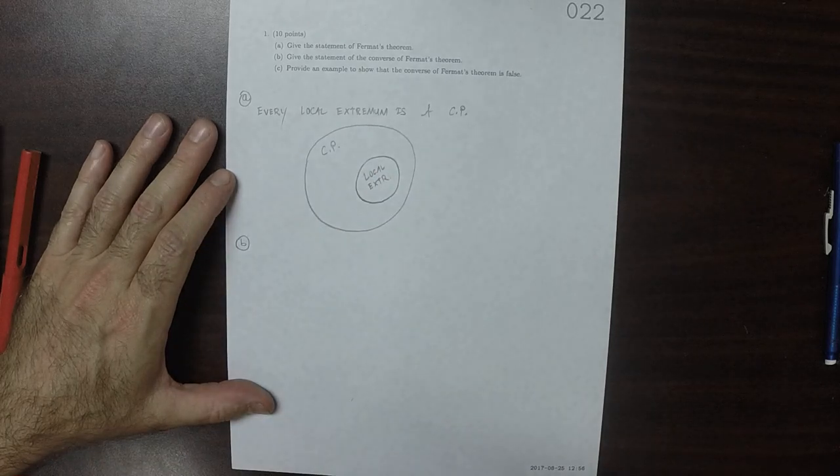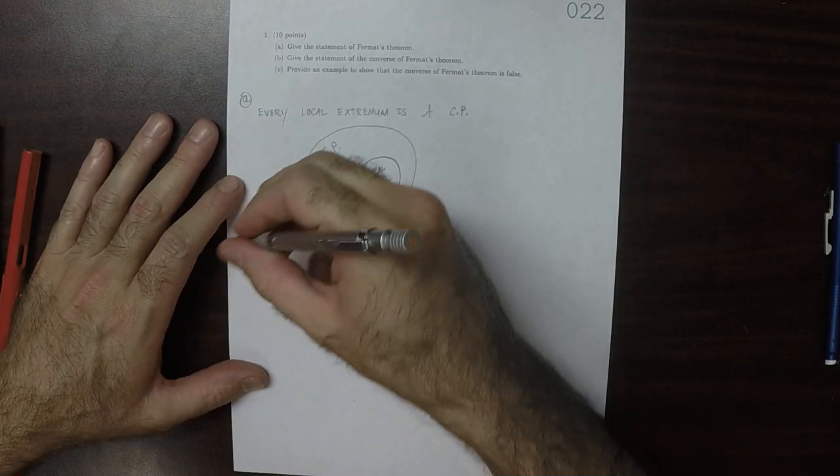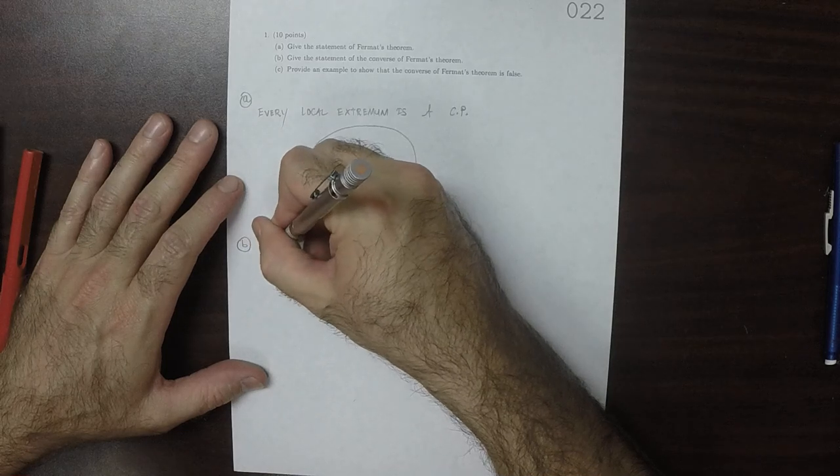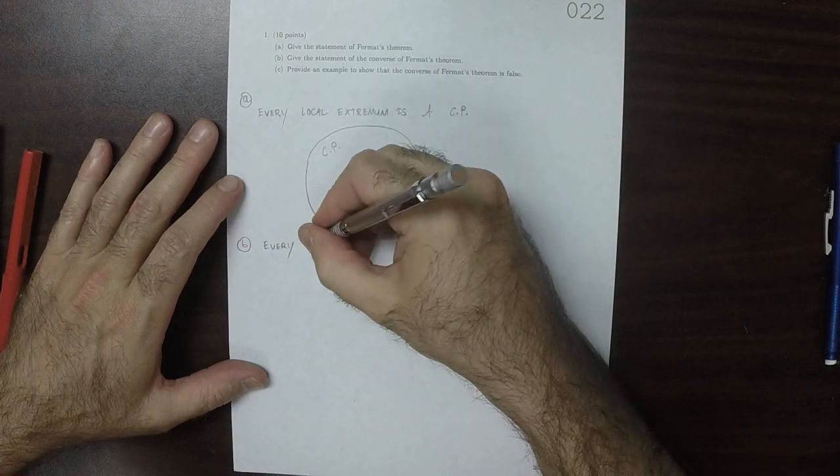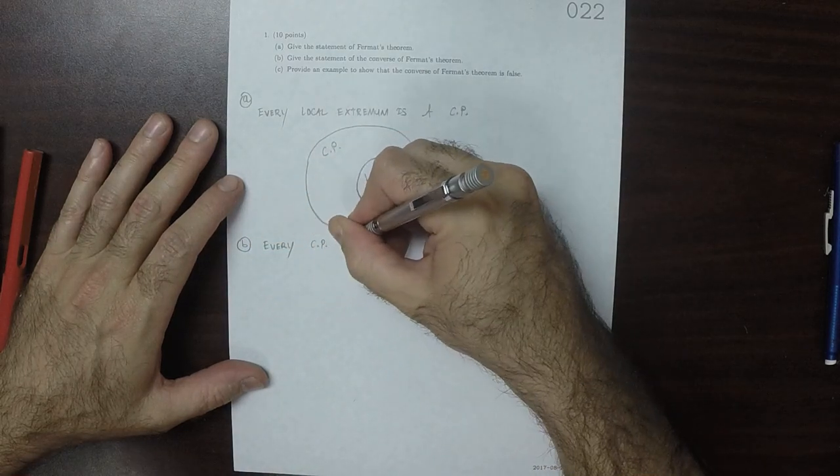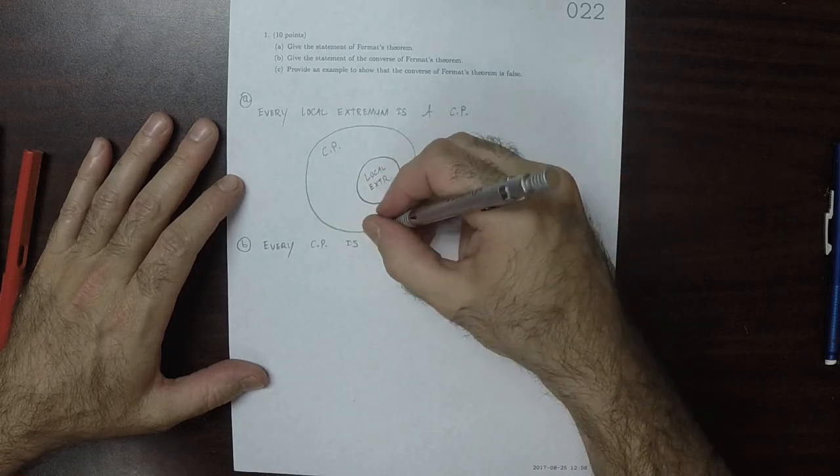Part B, the converse of Fermat's theorem is that every critical point is a local extremum.